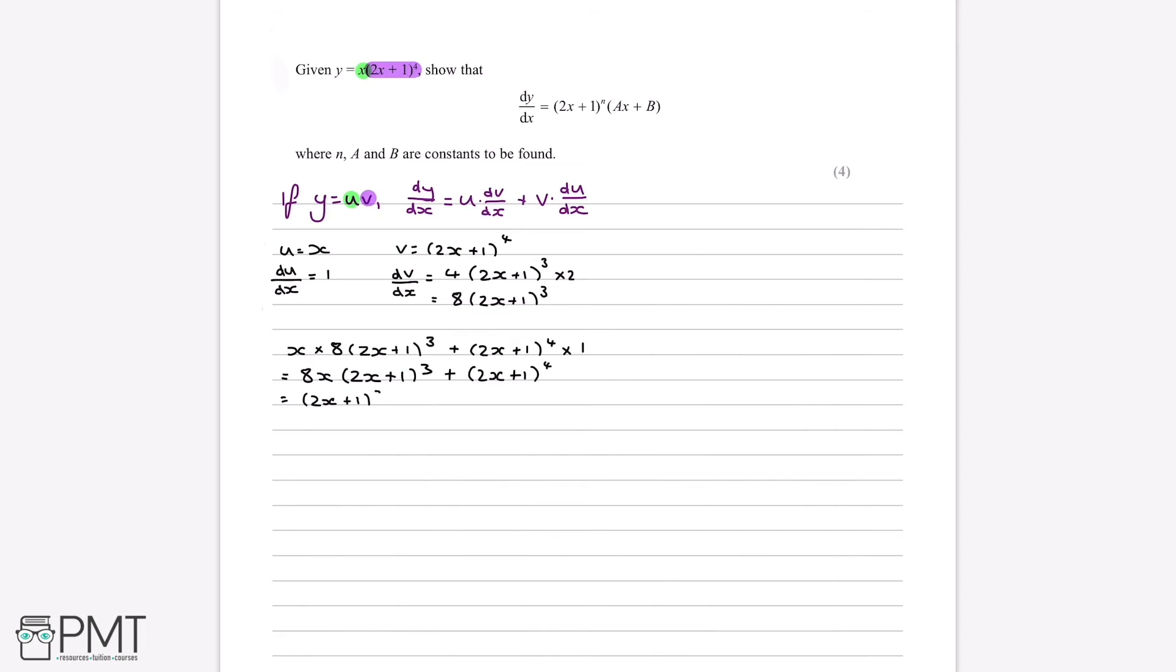2x plus 1 to the power of 3, open bracket, 8x plus 2x plus 1. Which, the inside of the second pair of brackets can then simplify to 10x plus 1.